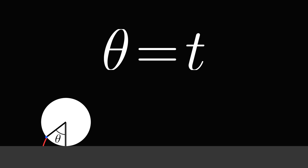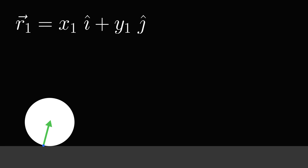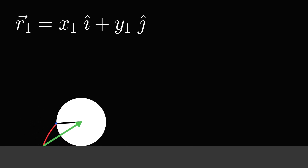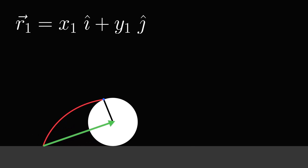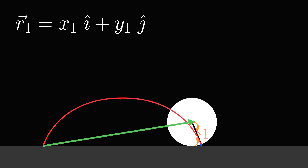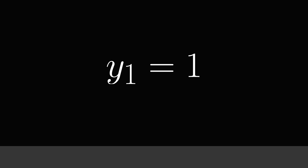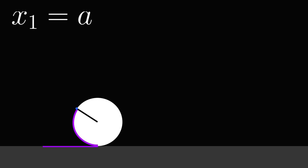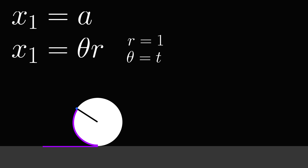If you want to think about this physically, we're going to rotate the angle one radian for every unit of time. To start with, we'll consider the function from the origin to the center of the circle. Notice that the height of the center always stays the same — this height is the radius, 1. This means that y1 is equal to 1. Also, consider that the distance moved along the x-axis will be equal to the arc length of the circle. Using the equation for arc length, a equals r times theta, where theta equals t and r equals 1, so x1 equals t.